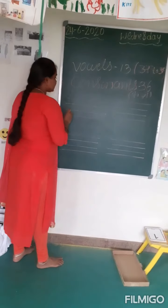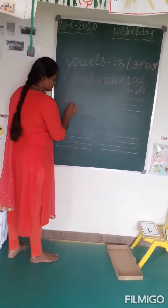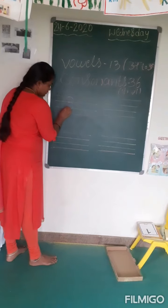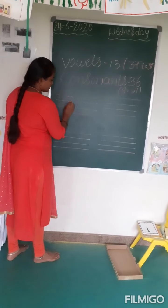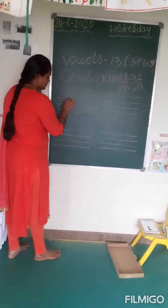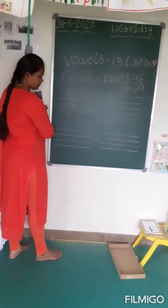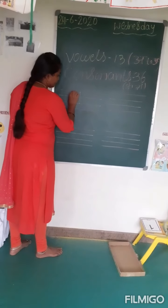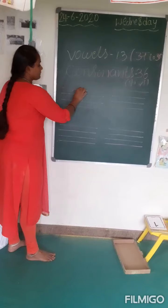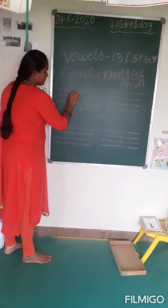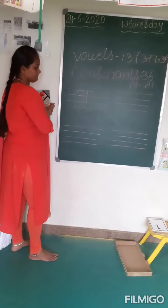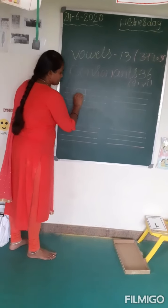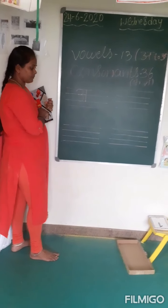The first letter is A. How to write A? First, write three lines — the first two lines. You have to write like T. And then write capital T beside it. And join it with one small slipping line. That gives us the letter A.